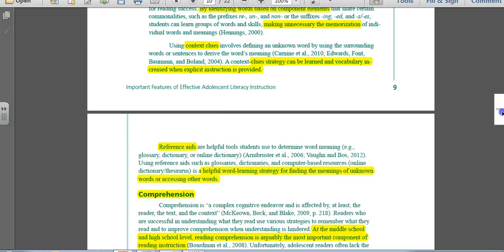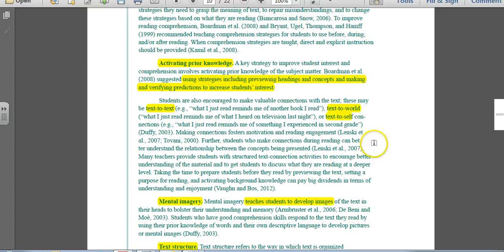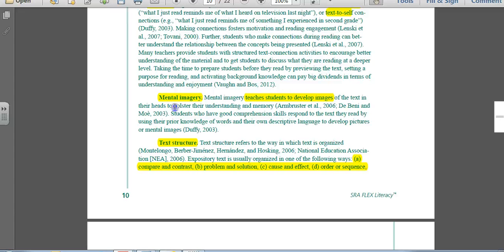The next area of adolescent literacy is comprehension. At the middle school and high school level, reading comprehension is arguably the most important component of reading instruction. Some components under comprehension: activate their prior knowledge, make some connections with them using headings and concepts. We want them to make text-to-text connections. Maybe they've read another book that reminds them of what they're reading right here. Text-to-world. Maybe they saw something on TV that made them connect. A lot of times history channel or discovery channels will give you connections to that. Text-to-self. Maybe they had something that happened to them before. Maybe they had an experiment that they've done in another grade that reminds them of what they're talking about now.